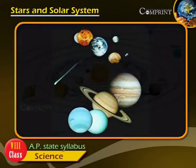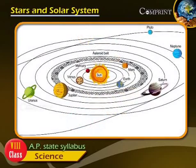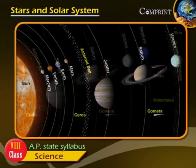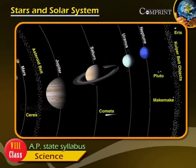The eight planets in their order of distance from the Sun are Mercury, Venus, Earth, Mars, Jupiter, Saturn, Uranus and Neptune.